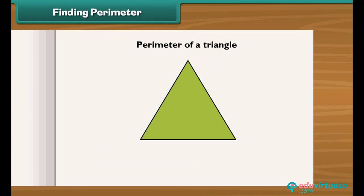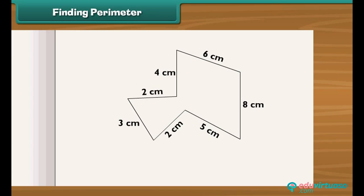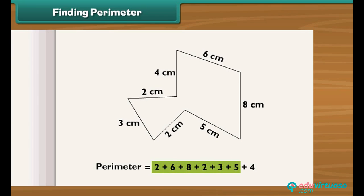Perimeter of a triangle: a triangle is a three-sided figure. If A, B, and C are the three sides of a triangle, then its perimeter equals A plus B plus C. Let's calculate the perimeter of a given figure. To calculate the perimeter, we simply add the lengths of all its sides: 2 plus 6 plus 8 plus 2 plus 3 plus 5 plus 4, which equals 32 centimeters.